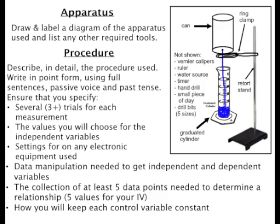Your procedure should also include the settings on the electronic equipment, any calculations you will have to do in order to get your independent and/or dependent variables, and some indication of how you will keep each of your control variables constant. This last point is actually really important. It might even be worth it, once you've written your procedure, to go over it with your list of control variables and make sure that you've addressed each and every one of them.